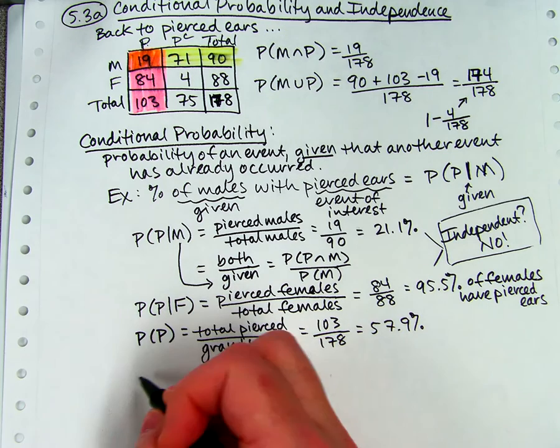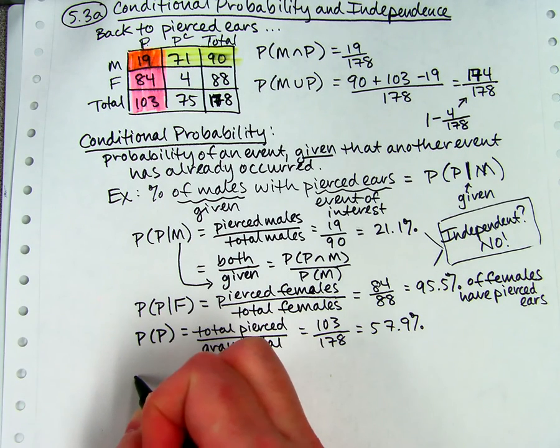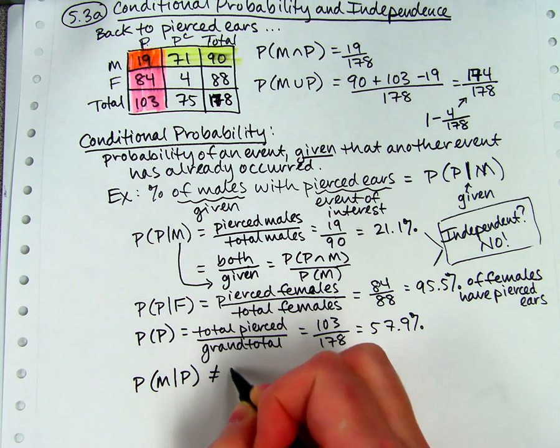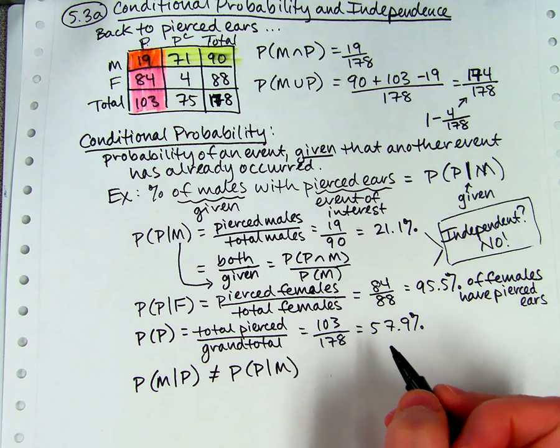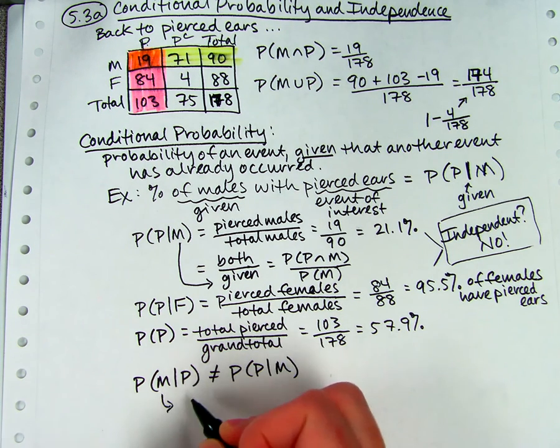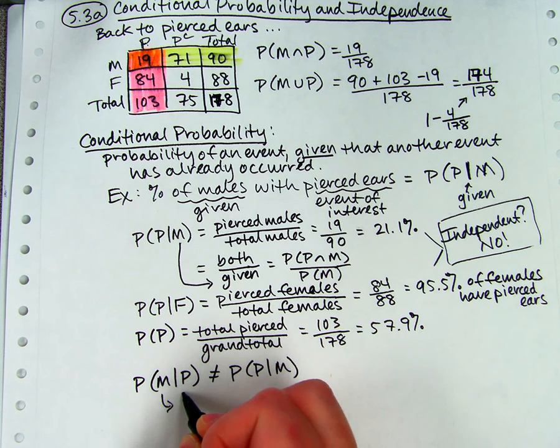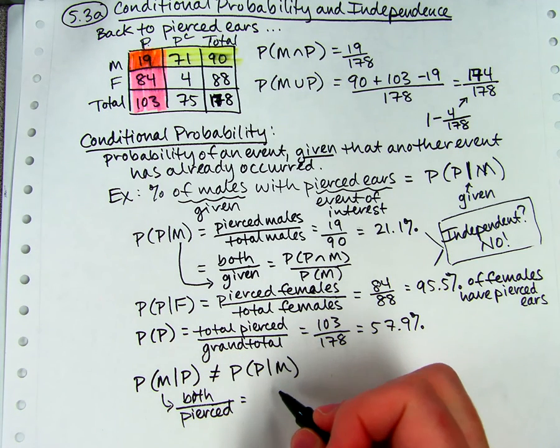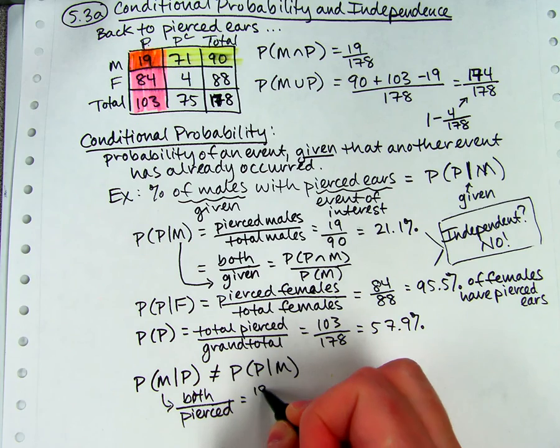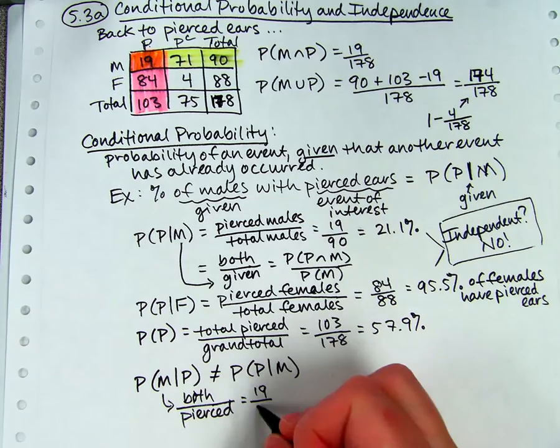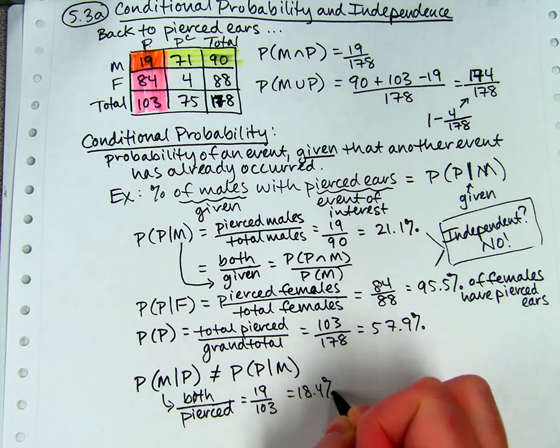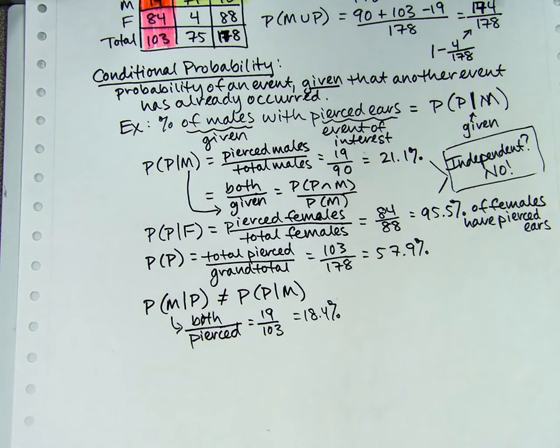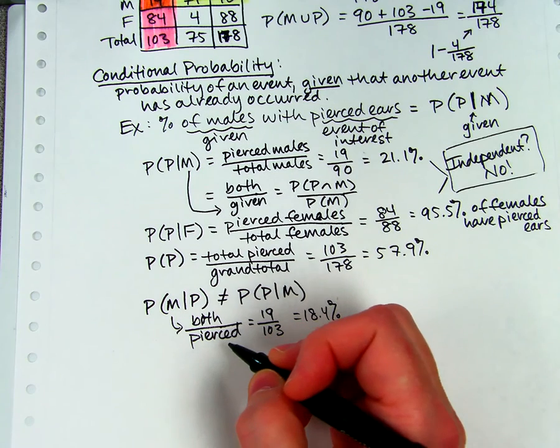Before I go to the official formula and the definition of independent, I want to point out that if you do it the other way, and we saw this in chapter one, the probability of male given pierced is not usually the same as the probability of pierced given male. So it makes a difference which direction you're going. Male given pierced would be the both male and pierced divided by just the pierced. Both divided by pierced would be 19, and instead of dividing by 90, we're dividing by 103. It's 18.4%. But the important thing is to notice it's not the same as that one. They're different. So watch out for that. They're not the same thing. The thing that is given always goes on the bottom.